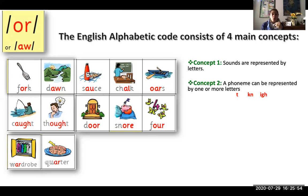Concept number two: A phoneme or a sound can be represented by one or more letters. For example, as in knock, or I.